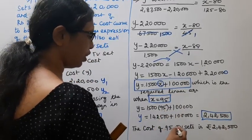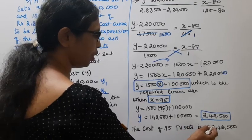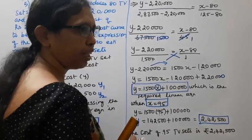The cost of 95 TV sets is rupees 2,42,500.